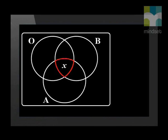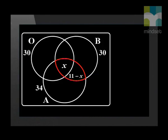If 34 liked apricots, then the whole subset A must add up to 34. It's also given that the whole subset O and the whole subset B must add up to 30. We write these numbers outside the respective subsets first. It is also given that 11 liked apricots and bananas, which means that the intersection between A and B must add up to 11. Thus, we can fill in that this area will be 11 minus X.